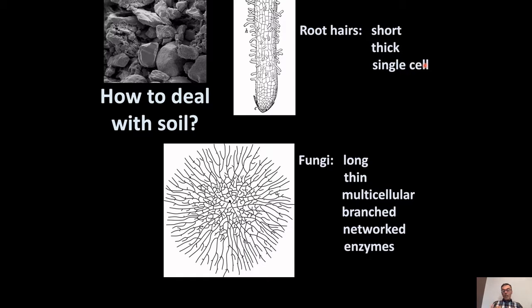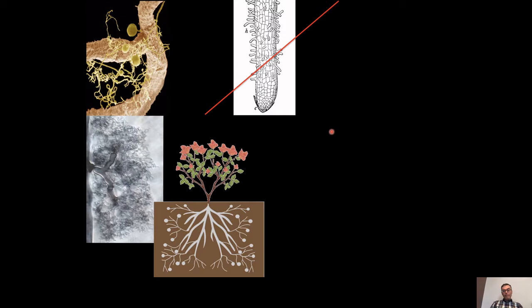In contrast, fungi can be much more efficient in the way they explore soil and mine scarce resources. Fungi produce filaments — threads that are very, very long, many meters even. They can be very thin, about ten times thinner than root hairs, and they are composed of many cells with many more possibilities: they can branch and they can network, fusing with each other to make complex networks. Fungi are also very good at releasing enzymes into the environment to break down complicated molecules and bring in simpler ones into their cells.